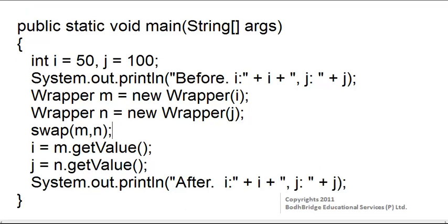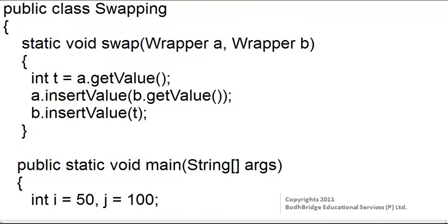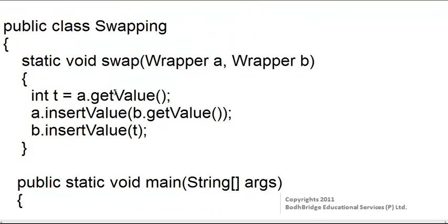Now the values are printed. Within the swap method, the procedure for swapping the two numbers is given. A variable t is declared which gets the value using the getValue function, then the insertValue function is called for object a, and likewise the insertValue function is called for object b.